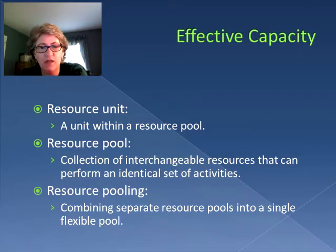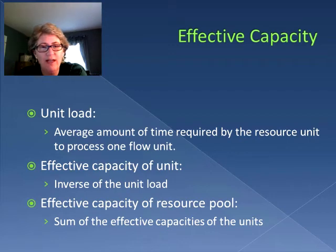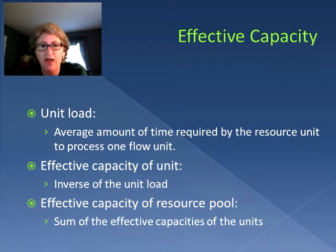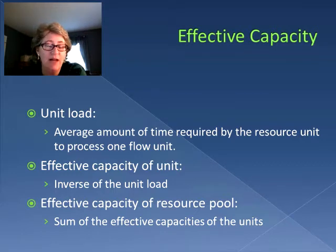Resource pooling says we're going to be able to combine separate different pools into a single flexible pool. So our terminology says we have an individual resource unit and that unit belongs to a resource pool. We also need to know for that individual unit how long it needs to process a flow unit. For example, a washing machine may take 30 minutes to process a load of wash. That is the average amount of time required by the resource unit to process a flow unit. So the effective capacity of the unit, which is the inverse of the unit load, is if we have 30 minutes per load of wash, that means we can get two loads done in an hour.